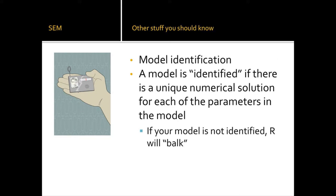Moving on to model identification — these are unique data screening items for SEM, sort of like assumptions you should know exist and double-check before running. A model is identified if there is a unique numerical solution for each parameter. The computer will give you an error message if this isn't fulfilled. The first criterion: degrees of freedom must be greater than zero, meaning you're not estimating too many things based on how many measured variables you have.